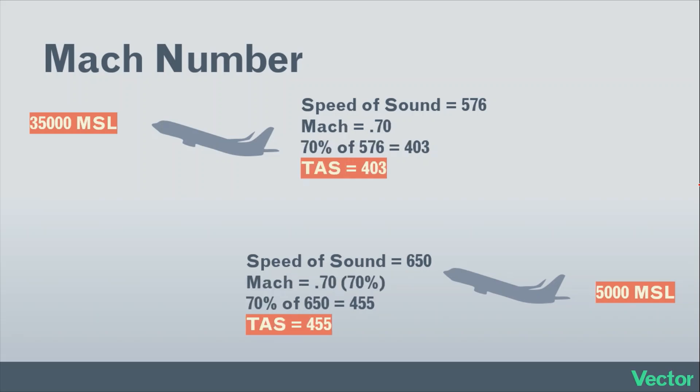If we hold a constant Mach number in a climb, we're holding a constant percentage of the speed of sound, which is decreasing with altitude. For example, holding Mach 0.70 means we're holding 70% of a decreasing number. So as we climb at a constant Mach, our true airspeed is going to decrease. At a constant Mach in a climb, true airspeed decreases.